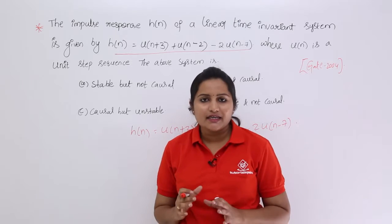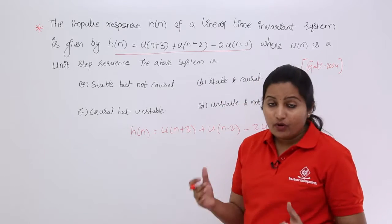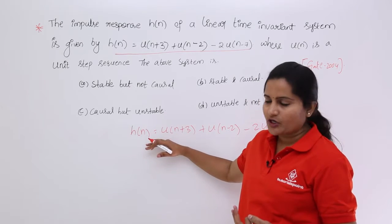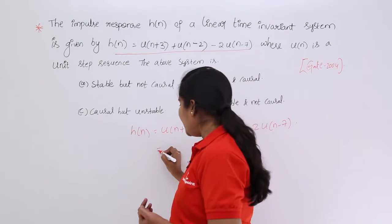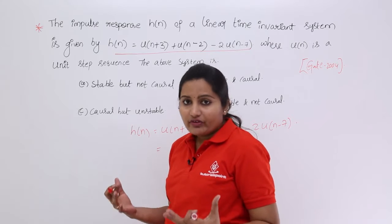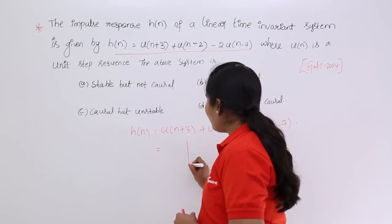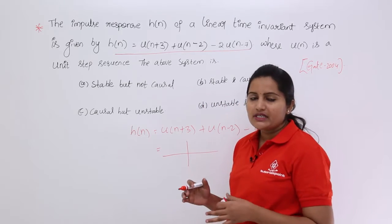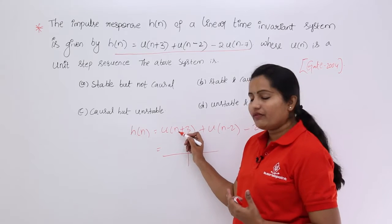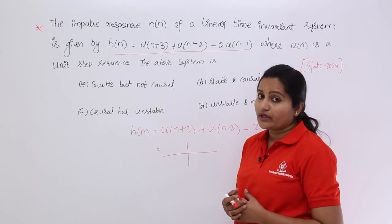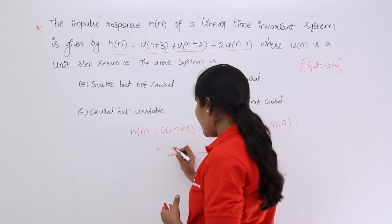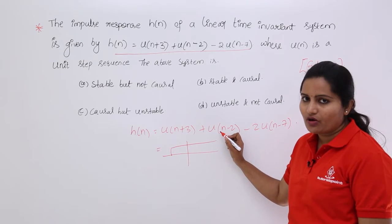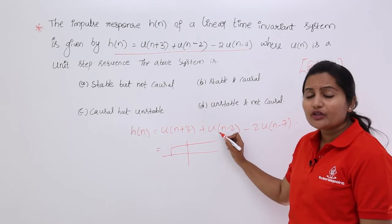To check stability, we analyze the signal components. u(n+3) is a shifted unit step — equating n+3 = 0 gives n = -3, so the unit step starts at n = -3. u(n-2) means the signal starts at n = 2, since setting n-2 = 0 gives n = 2.